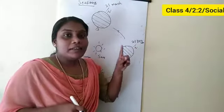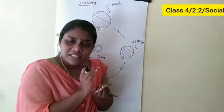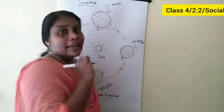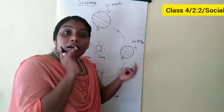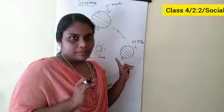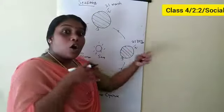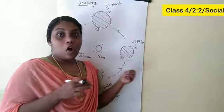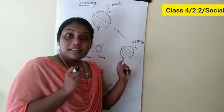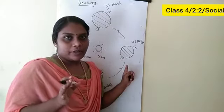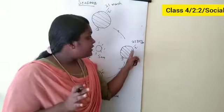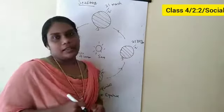21 December is the shortest day in the northern hemisphere — day is less, night is more. And it is the longest day in the southern hemisphere — day is more, night is less. So, 21 December is the shortest day in the northern hemisphere and the longest day in the southern hemisphere.